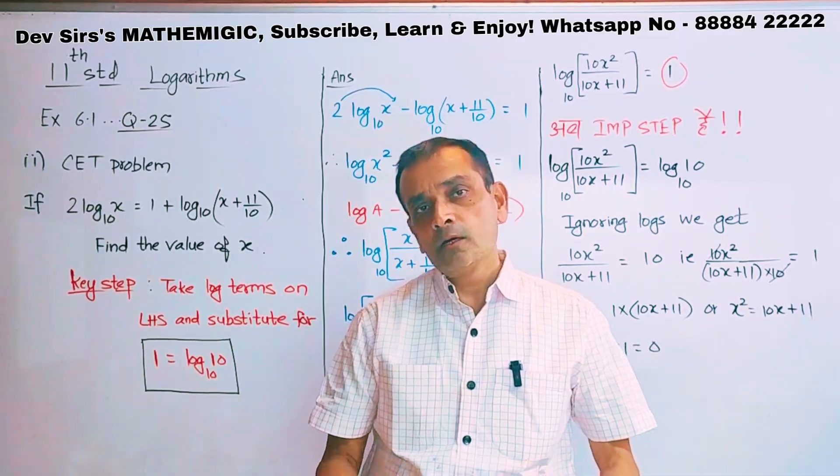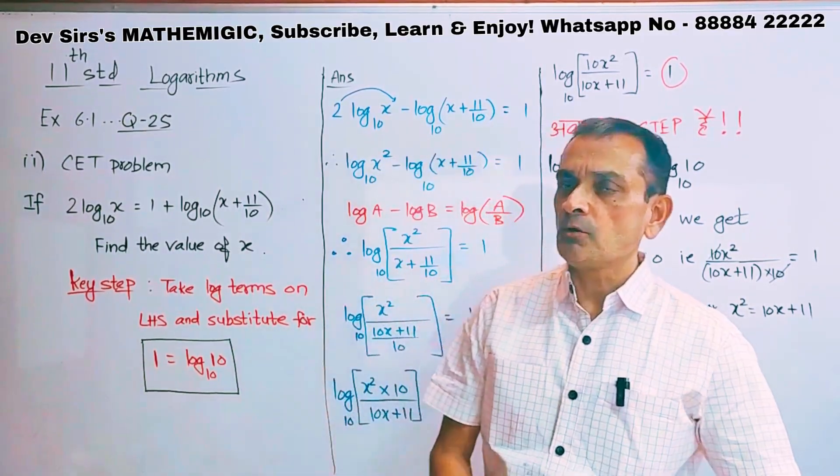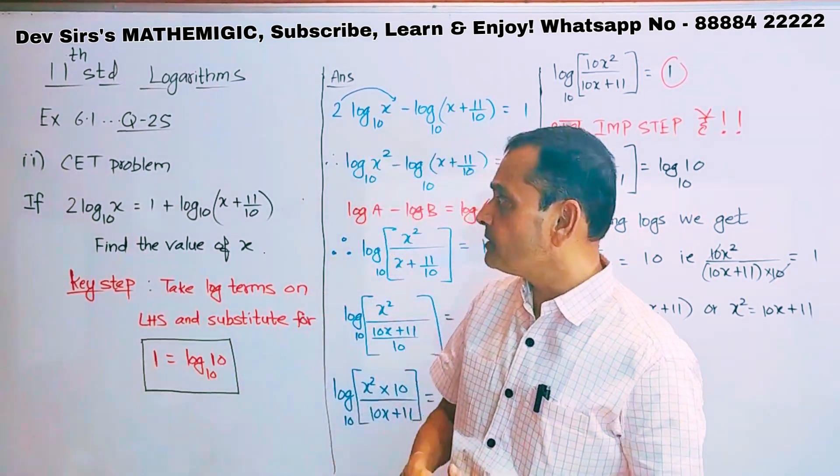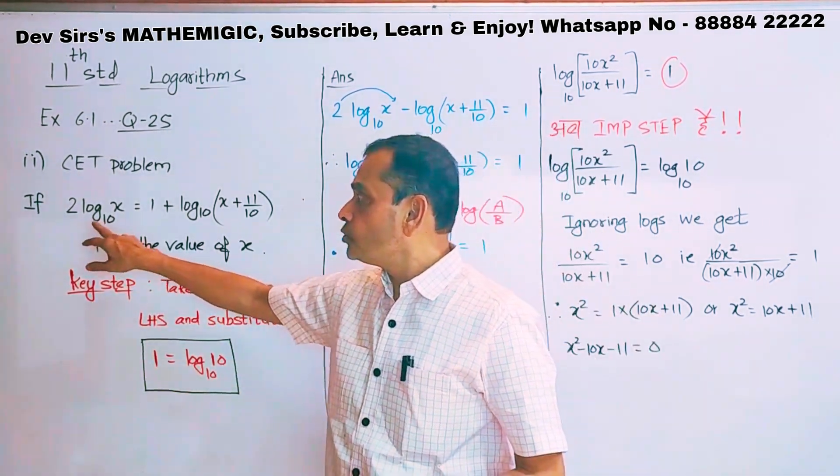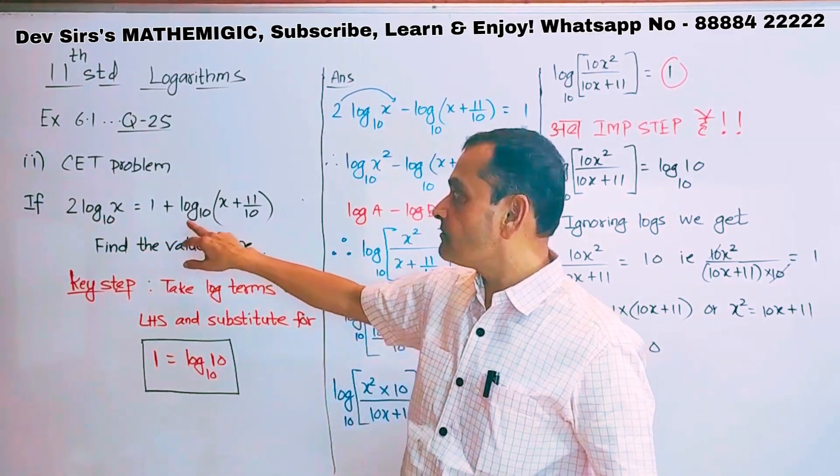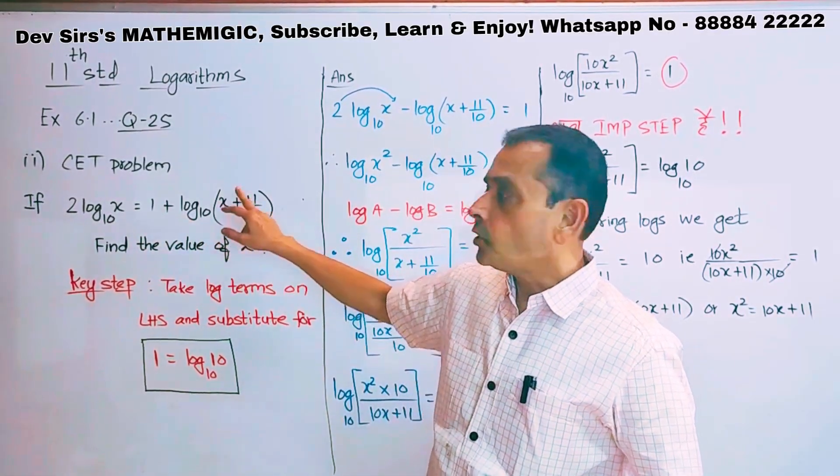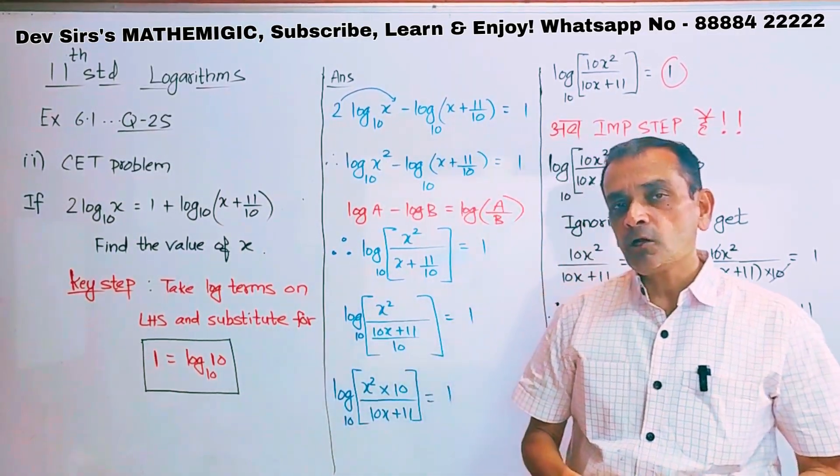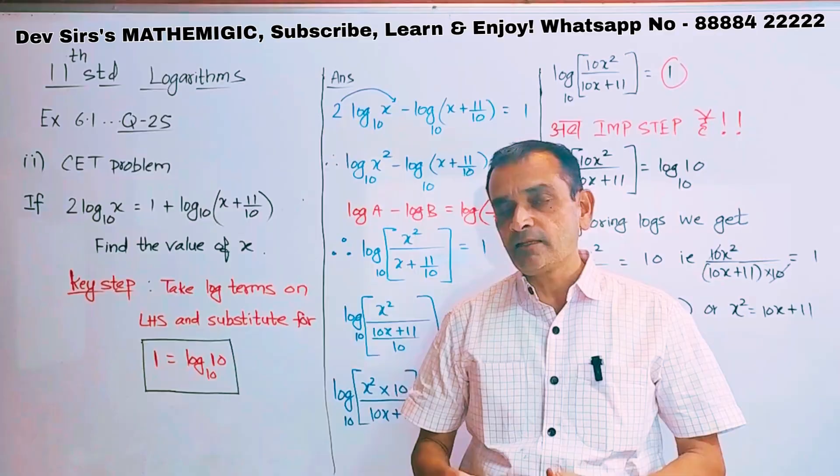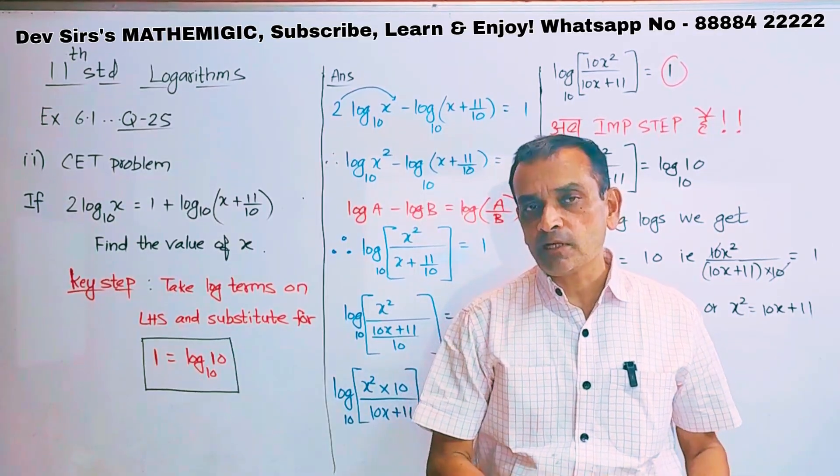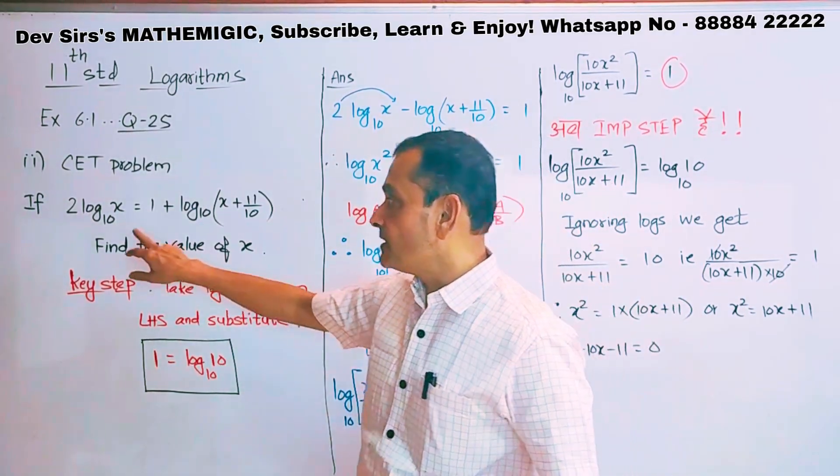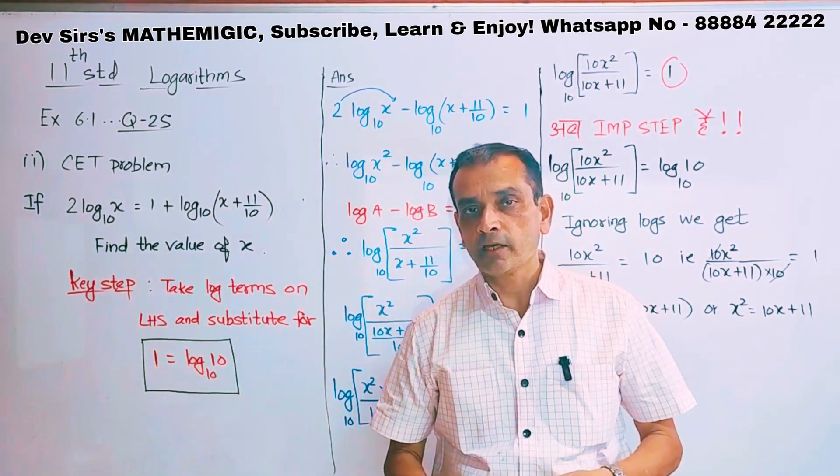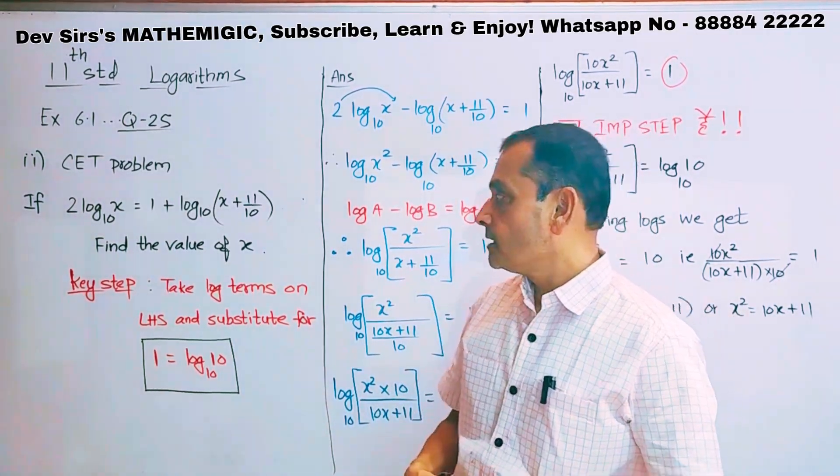Let's go straight away to the problem now. CET problem. 2 log x to the base 10 is equal to 1 plus log of this bracket to the base 10. Remember friends, we know that every log has a base, either it is e, 10, or some other base. Base is given. Question asked is find the value of x.